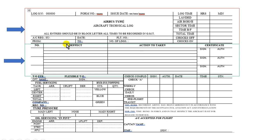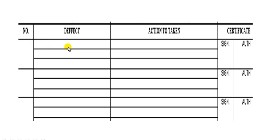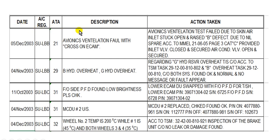The record section takes all aircraft technical logbook pages and issues an Excel sheet like this. This is part one and this is part two. This is the suggested page used in Lotus Air, an Egyptian company. Here is the date of the defect, here the registration of the aircraft, this column for ATA chapter, and this is the description of the defect, and here the action taken.